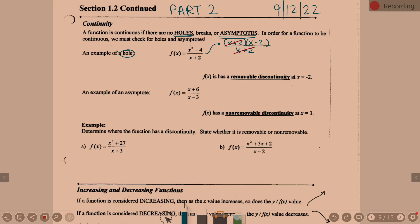Now, here's the deal. There's either a hole or an asymptote at the denominator. If I set this denominator equal to 0, if I set x plus 2 equal to 0, what are you going to get when you solve this?